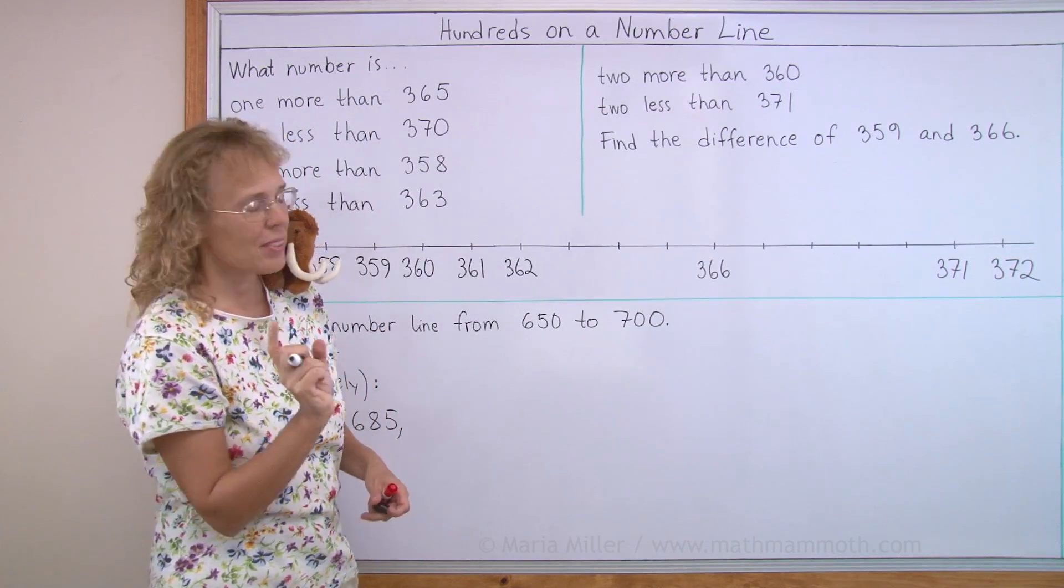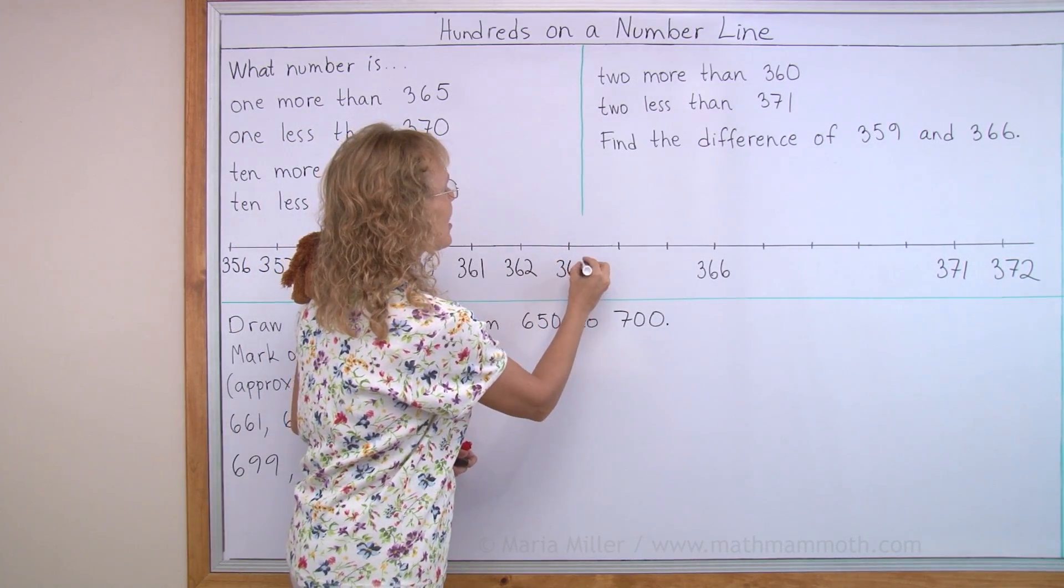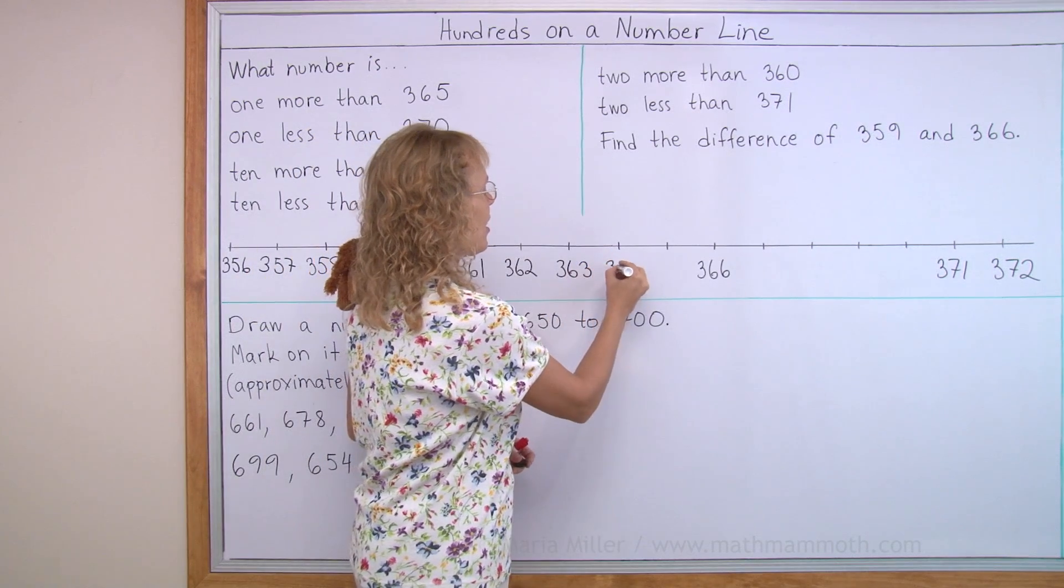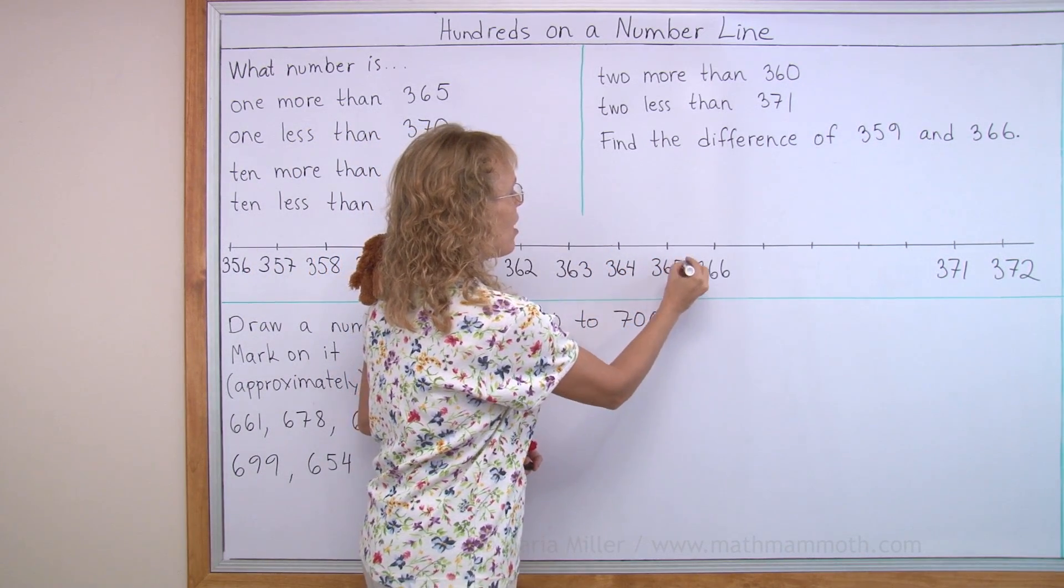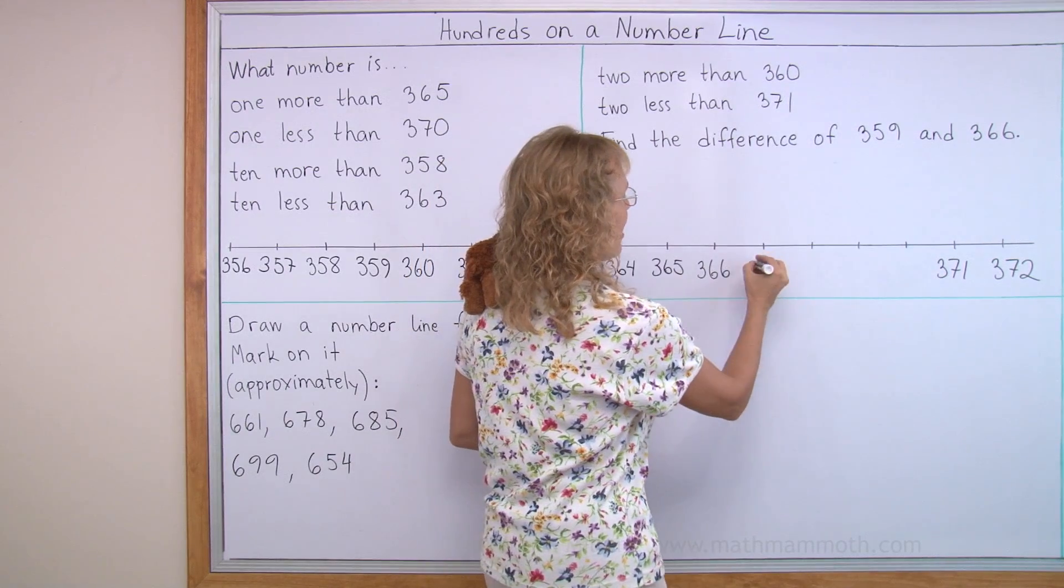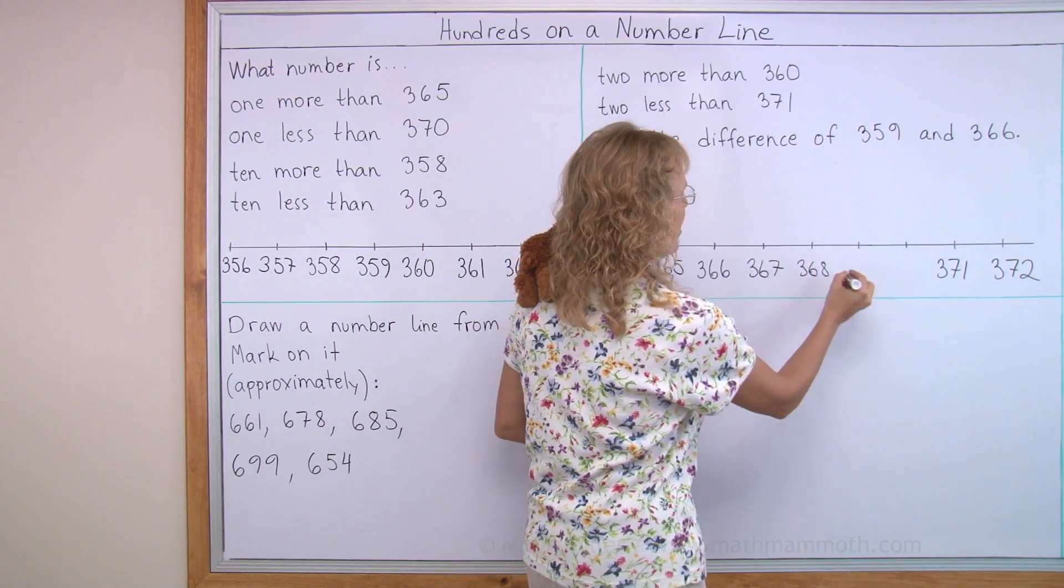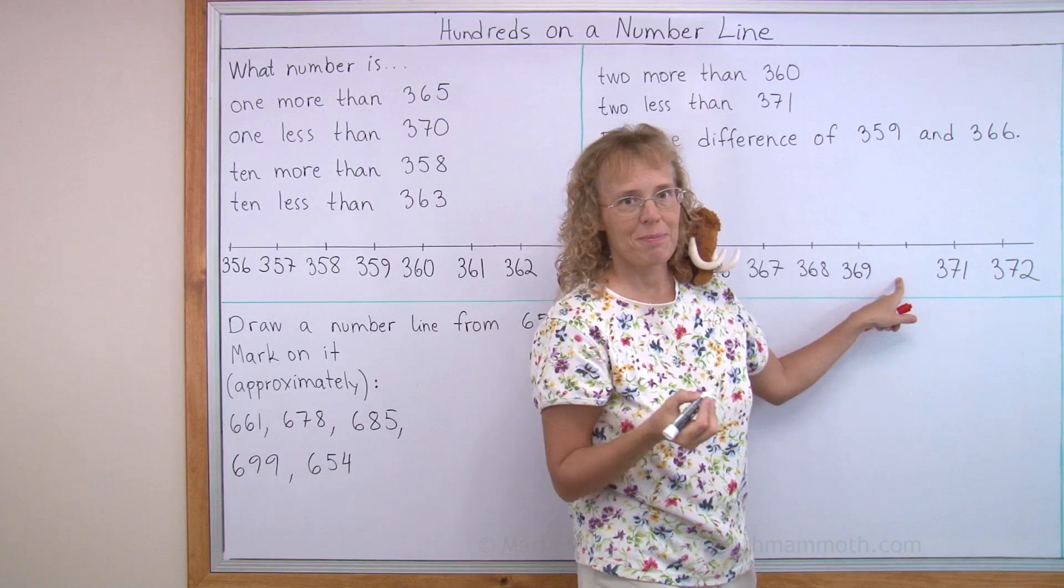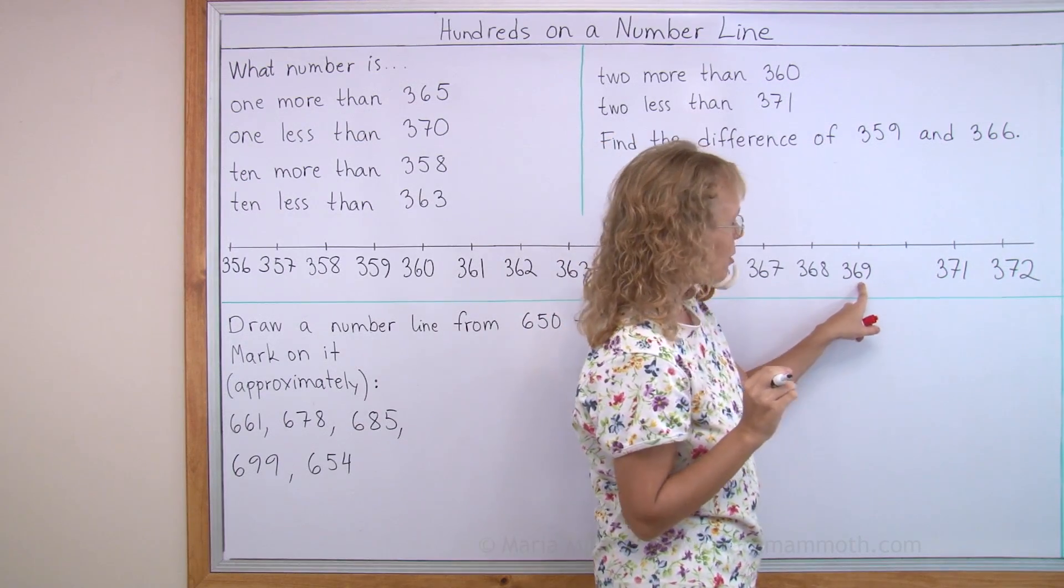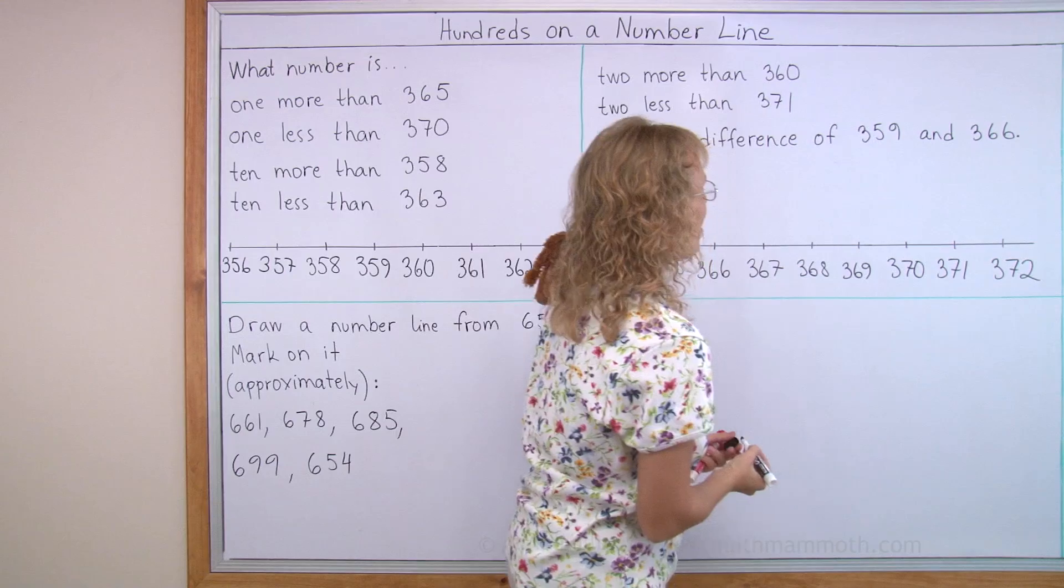Let's go on. What goes here? Okay. 62. So 363. And then 364, 365, 366, 367, 368. This is easy, isn't it? 369. And what comes after that? After 69 would come 70, so 370. And now our number line is ready.